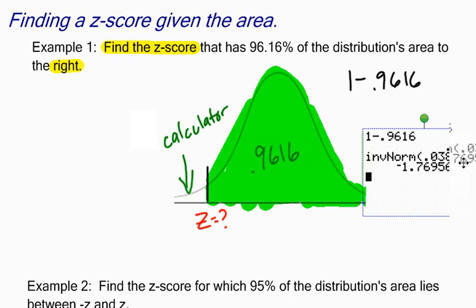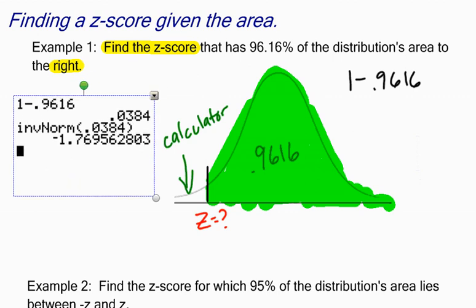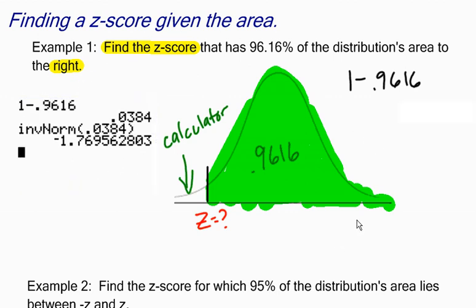So this z-score right here is equal to negative 1.77. Usually I like for my students to round off to two decimal places when they're using z-scores, so this would be rounded off to negative 1.77.